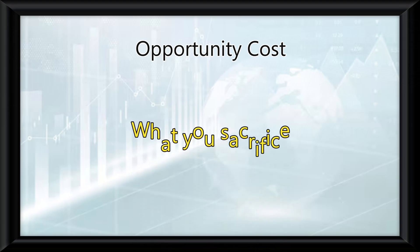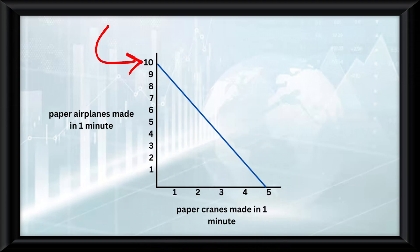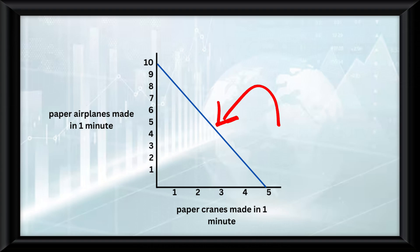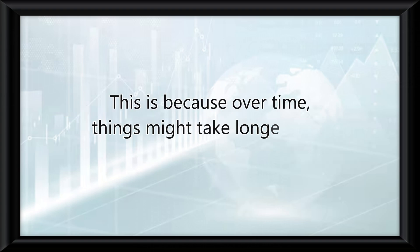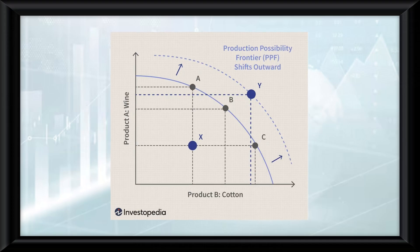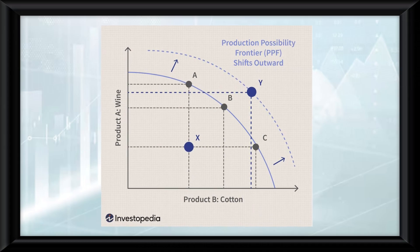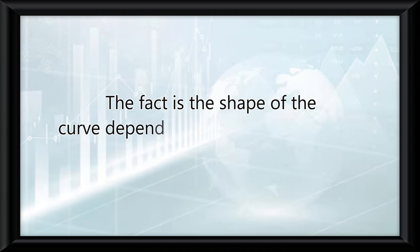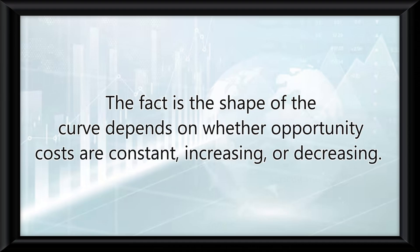This leads into the idea of opportunity cost. Opportunity cost simply means what you sacrifice. I sacrifice the ability to make 10 paper airplanes if I decide to produce 5 paper cranes, therefore making 10 paper airplanes my opportunity cost. Perfect straight lines aren't all that common, and only happen when opportunity costs are constant, because over time things might take longer to do. This means you might have curves that look different, but you can still calculate opportunity costs. The opportunity cost of making 40 manufactured goods is 40 agricultural goods, because that is the potential being sacrificed. The shape of the curve depends on whether opportunity costs are constant, increasing, or decreasing.